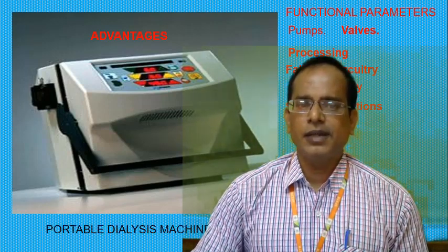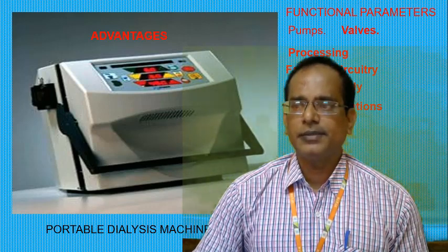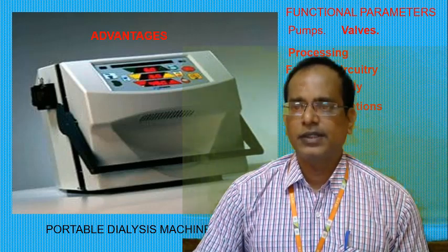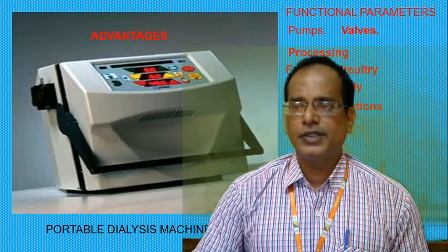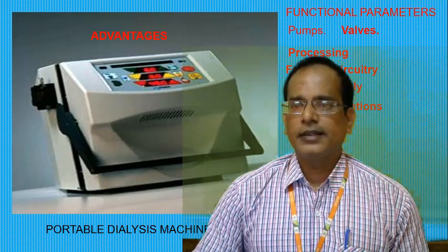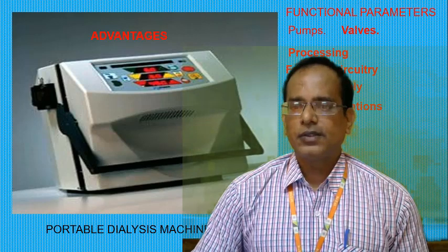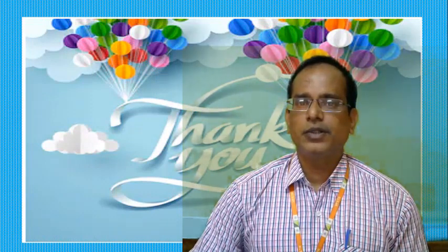In summary, the portable dialysis machine is better compared to other dialysers due to its many advantages. These dialysers have very good sensitivity, a frequency range of operation of about 8 MHz, a temperature operating range of minus 40 degrees Celsius to 35 degrees Celsius, affordable sensor and instrument prices, and Wi-Fi connectivity. This concludes the class on portable dialysis machines.